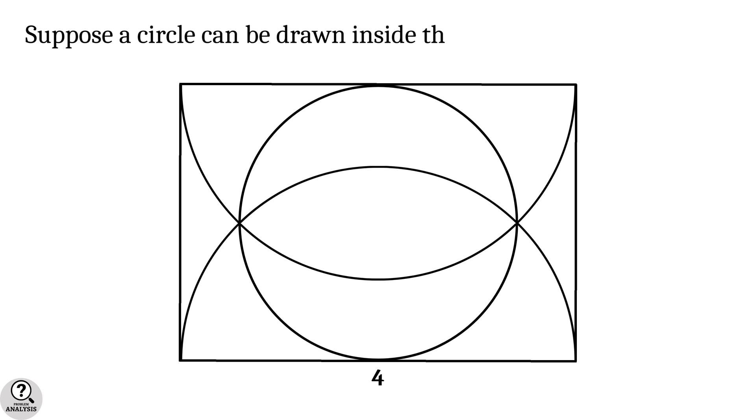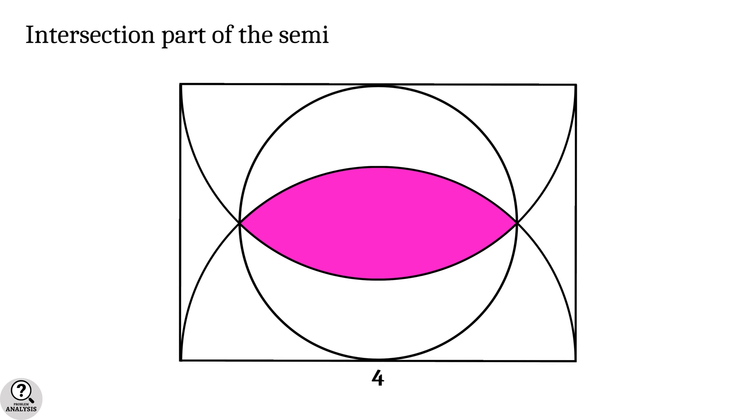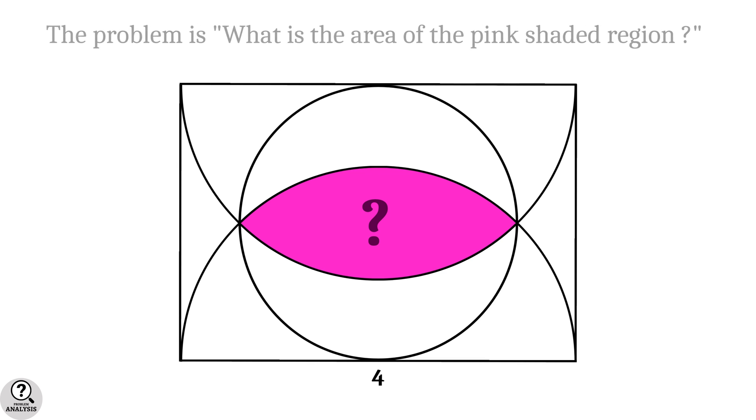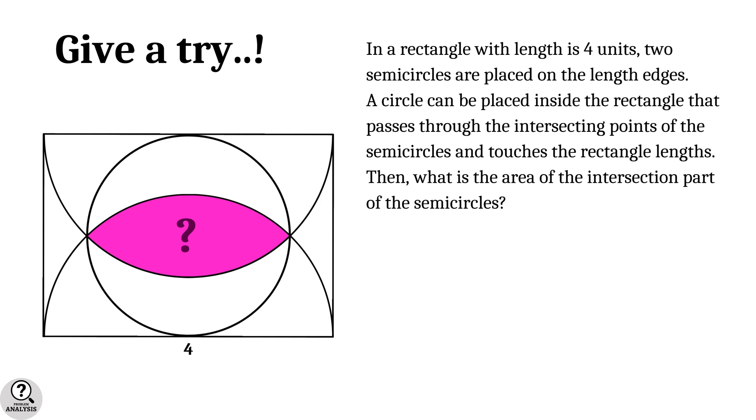Suppose a circle can be drawn like this. It passes through both intersecting points of the semicircles and touches both lengths of the rectangle. Now the intersecting region of the semicircles is shaded with pink color. Then my problem is, what is the area of this pink shaded region? If you want to attempt the problem, pause the video and just give a try.